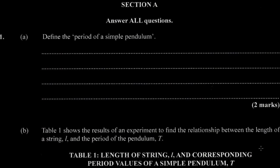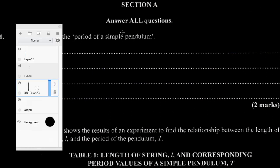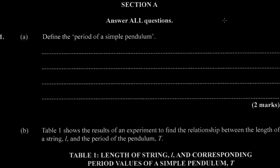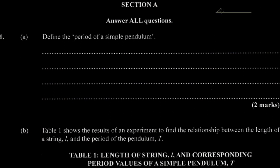Question one says: define the period of a simple pendulum. A pendulum is an apparatus in which we have a mass that is suspended from a fixed point by a light string, and is able to swing freely.